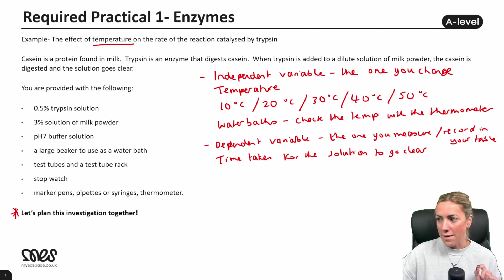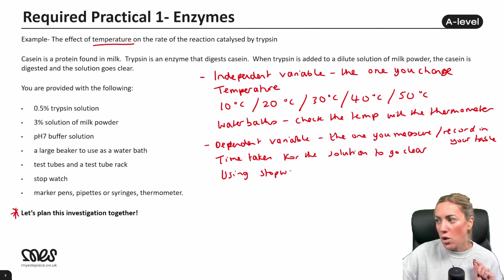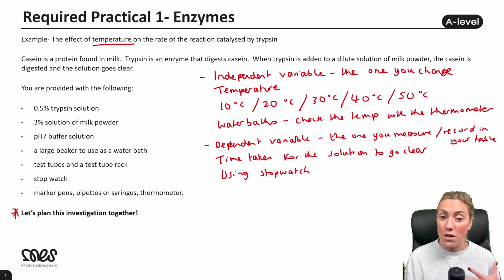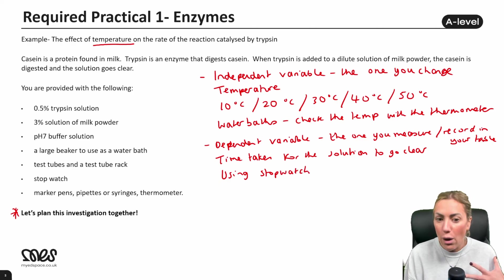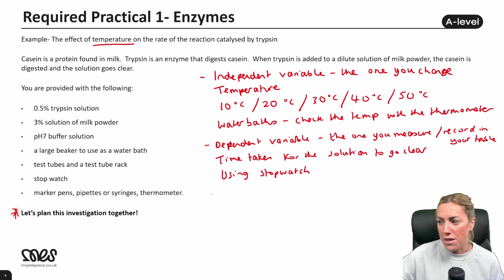It's always good practice to not only state what the variable is but also say how you're going to measure it. For the dependent variable here, we're going to use a stopwatch.